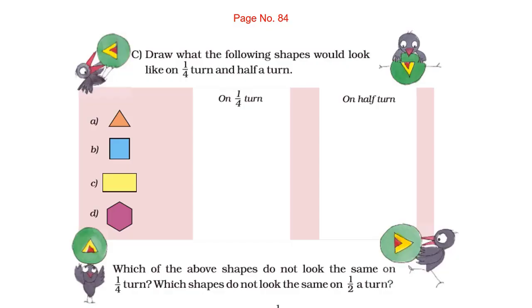Which of the above shapes do not look the same on one-fourth turn? Which shapes do not look the same on half a turn? Let us find out.